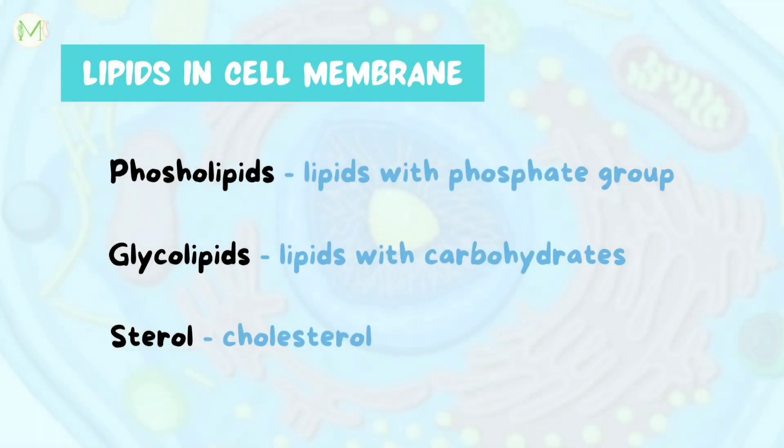There are three types of membrane lipids: phospholipids, glycolipids, and sterols. Lipids with a phosphate group attached are called phospholipids. When a carbohydrate group is attached to lipids, we call them glycolipids. Sterols are basically cholesterols. Among these three, phospholipids are the most abundant type of lipids.